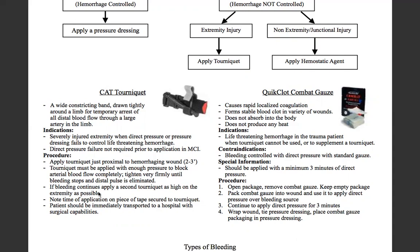If bleeding continues, apply a second tourniquet as high on the extremity as possible. Note the time of application on the piece of tape secured on the tourniquet — that can be seen right here. The patient should be immediately transported to a hospital with surgical capabilities.